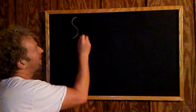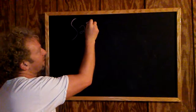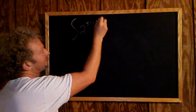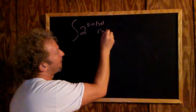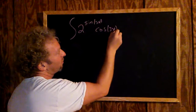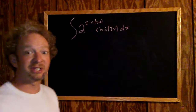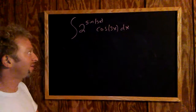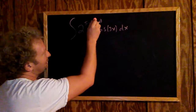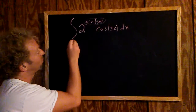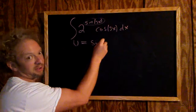We're going to look at the integral of 2 to the sine of 3x times the cosine of 3x with respect to x. This is a pretty scary looking integral. When you do this integral, you have to start by making a u-substitution. We're going to let u equal sine of 3x.